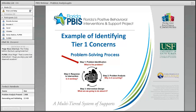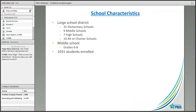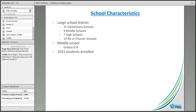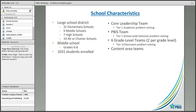Now we'll walk through a middle school case example. This is a large school district with about thirty-one elementary schools, nine middle schools, seven high schools, and about nineteen alternative or charter schools combined. The school in this example is a sixth through eighth grade middle school with over a thousand students enrolled. They have a core leadership team that focuses primarily on the academic side, a PBIS team that specifically focuses on implementing and analyzing tier one data on a monthly basis, and six grade-level teams — two per grade level — that are primarily PLCs where teachers participate in problem-solving around their own classroom or grade level.